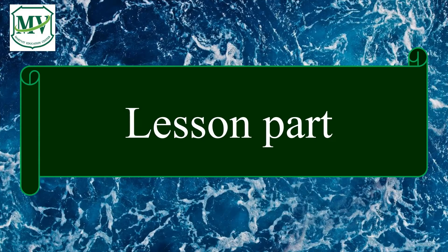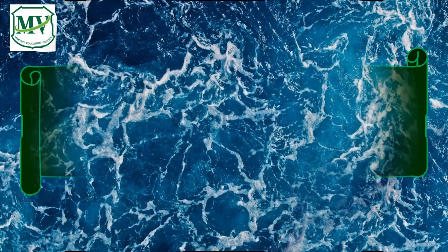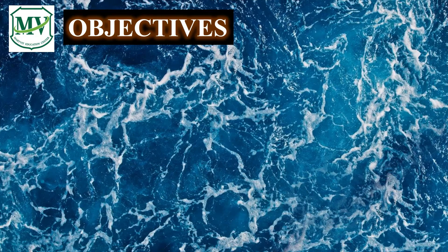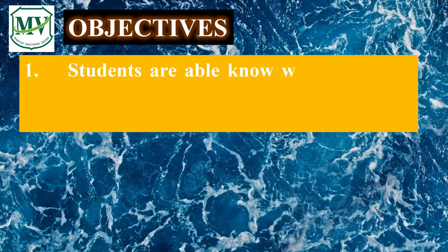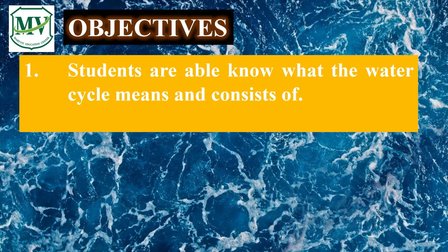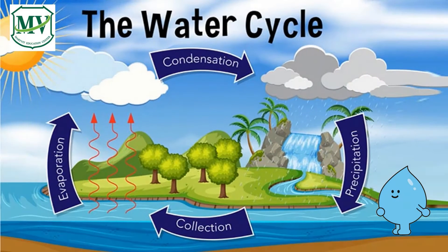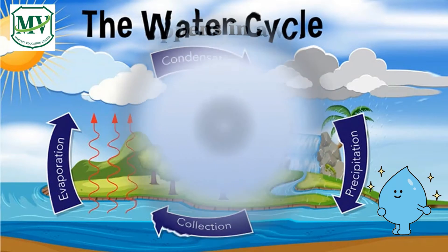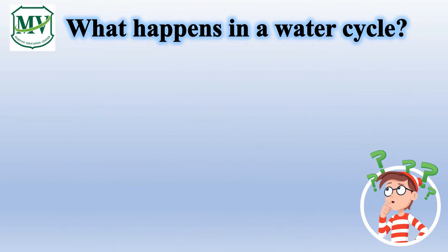Let's proceed to our lesson part. At the end of this lesson, students are able to know what the water cycle means and consists of. In today's episode, we will learn about the steps of the water cycle and how it occurs. Water on the earth is continuously going around from the land to the sky and back. It is called the water cycle.